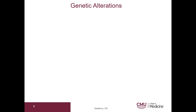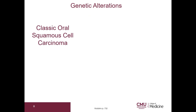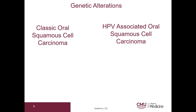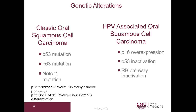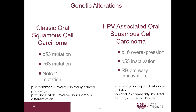Let's discuss genetic alterations for classic and HPV-associated oral squamous cell carcinoma. The classic form has P53 mutation, P63 mutation, and NOTCH1 mutation. P53 is commonly involved in many cancer pathways; P63 and NOTCH1 are involved in squamous differentiation. HPV-associated oral squamous cell carcinoma has P16 overexpression, P53 inactivation, and retinoblastoma pathway inactivation. P16 is a cyclin-dependent kinase inhibitor. P53 and Rb are commonly involved in many cancer pathways.